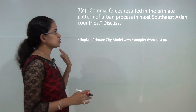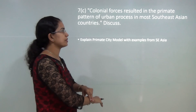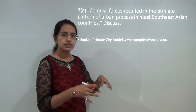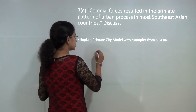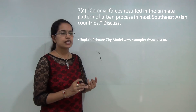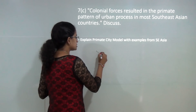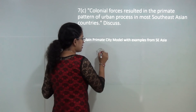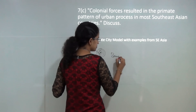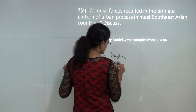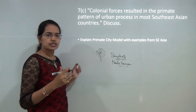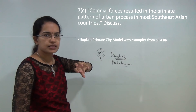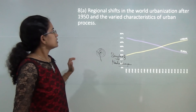The next question states: colonial forces resulted in the primate city pattern of urban processes in most Southeast Asian countries. When colonial expansion took place, colonizers selected locations close to coastal areas, suitable for transportation or population settlement, resulting in one or two major centres developing dominantly within a country. Examples of the primate city model include Bangkok in Thailand and Kuala Lumpur in Malaysia. You need to explain the primate city model and the colonial forces as the main causes of its growth.